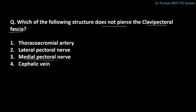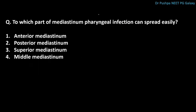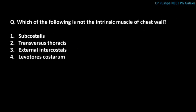Which of the following structure does not pierce the clavipectoral fascia? The correct answer is the medial pectoral nerve. The structures piercing the clavipectoral fascia are the thoracoacromial artery, lateral pectoral nerve, cephalic vein, and lymphatics from the breast. Which of the following part of mediastinum can pharyngeal infection spread to easily? The correct answer is the superior mediastinum. Pharyngeal infection from mucosa-associated lymph tissue may spread to tissue spaces around the neck adjacent to the pharynx.